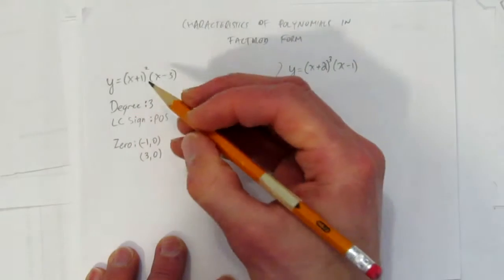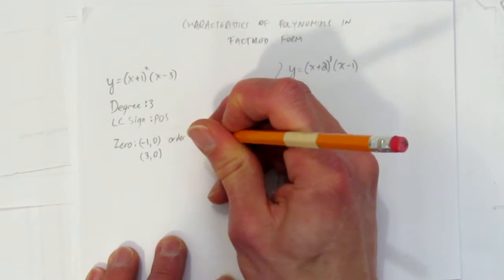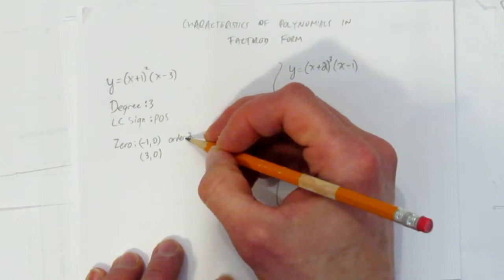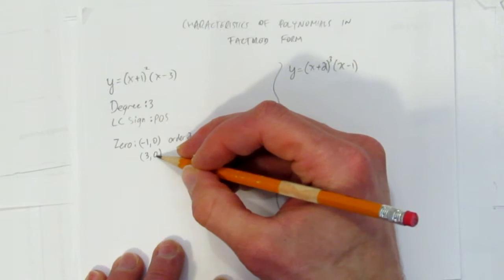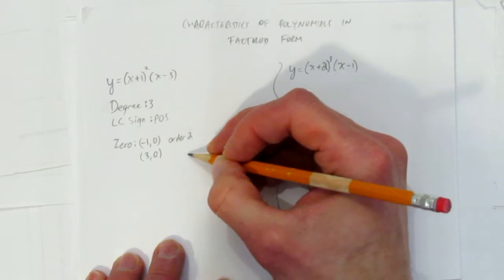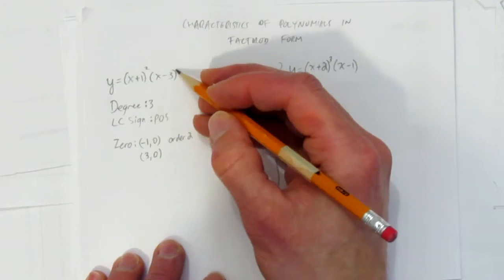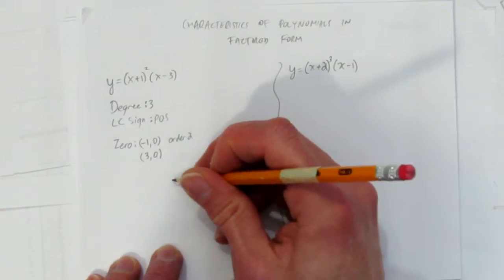But it's worth noting that this 0 is what we call order 2. And that's just simply saying it has an exponent of 2. It's going to have a particular behavior at this 0. You could write down order 1 for this 0, but we're just going to leave it as a default. Because most zeros, or the default, is order 1, or just no exponent here. Why is that important? We'll see when we sketch it.